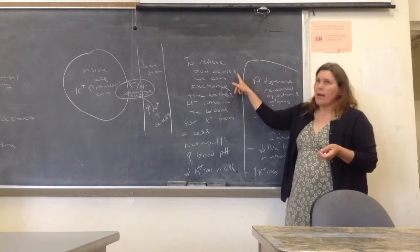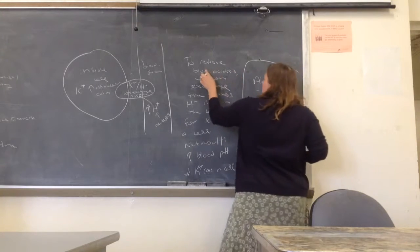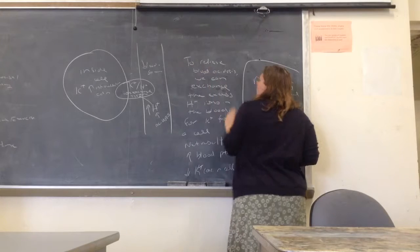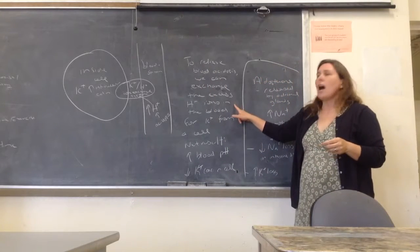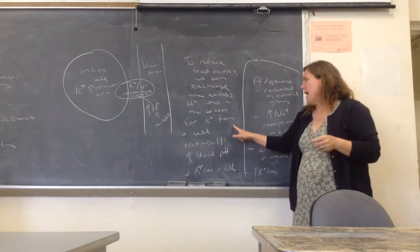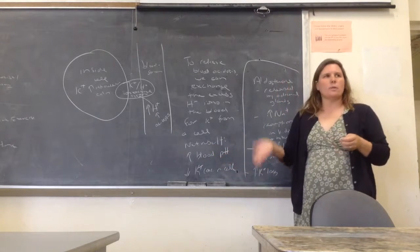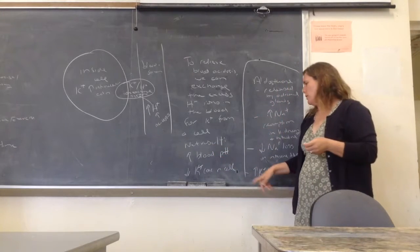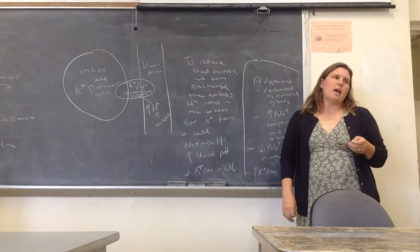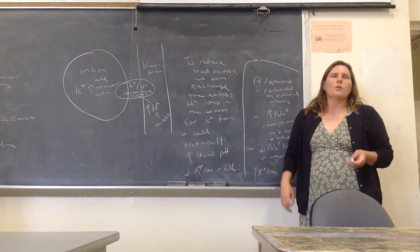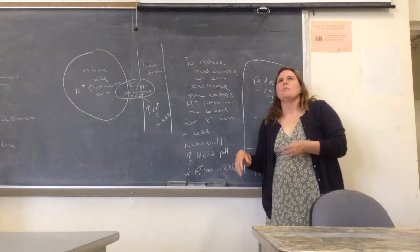To relieve blood acidosis, we can exchange the excess hydrogen ions in the blood for potassium from a cell. The net result is you increase the blood pH, so you leave acidosis, but you decrease the potassium concentration in the cell. So the next step is going to be you have to increase the potassium in the blood.